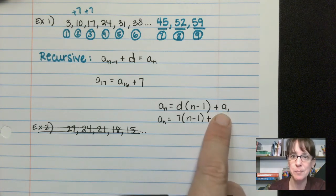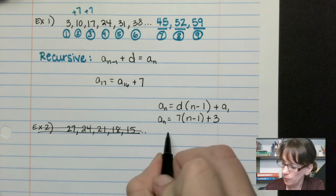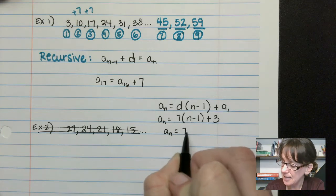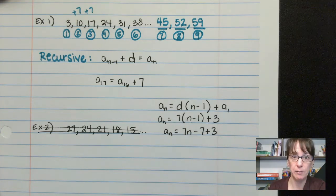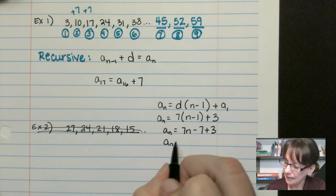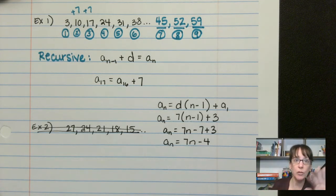So we say a_n equals our common difference of 7 times (n minus 1) plus position. What's the answer in position 1? The answer in position 1 is 3. So we say a_n equals 7n minus 7 plus 3, because you'll notice I'm just distributing here. So a_n equals 7n minus 4. So here's what the rule is.